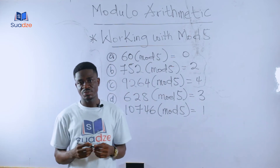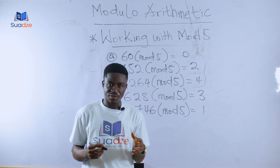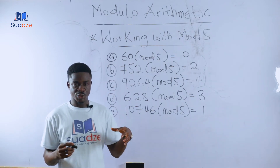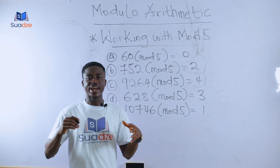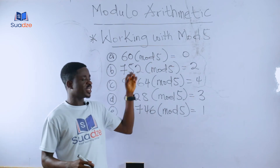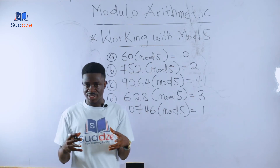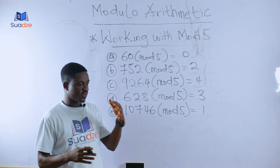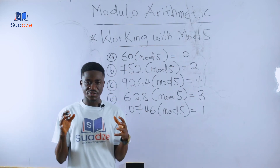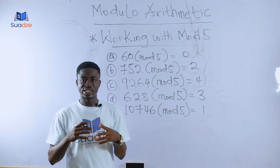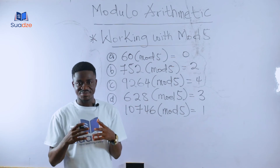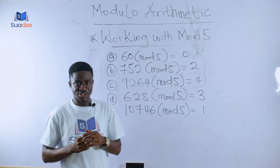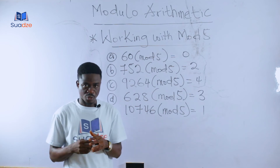So this is the trick for dealing with modulo 5: whenever the last digit is between zero and four, the last digit becomes your answer. Whenever the last digit is between five and nine, you subtract five from that last digit, and the result becomes your answer.